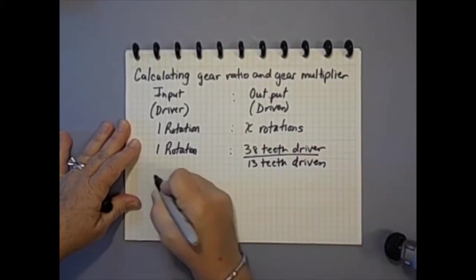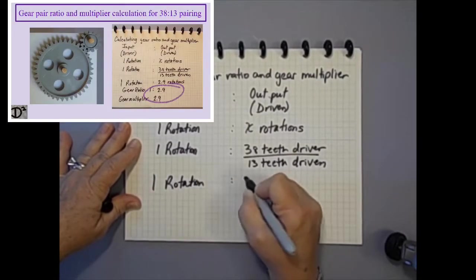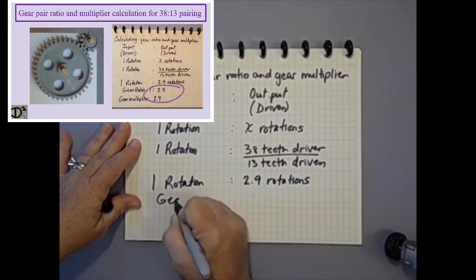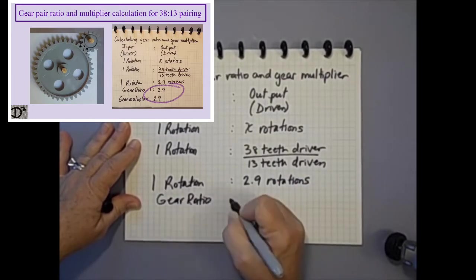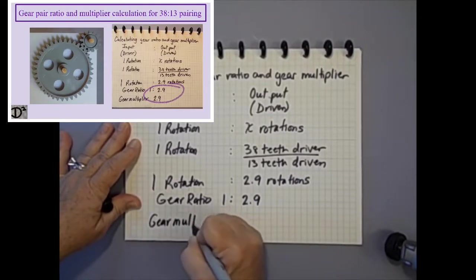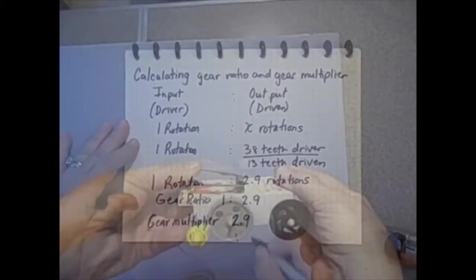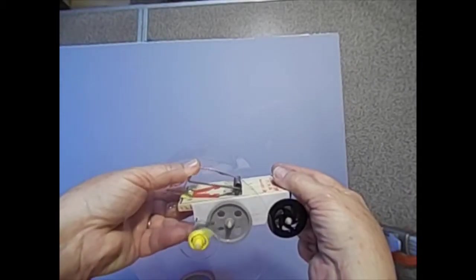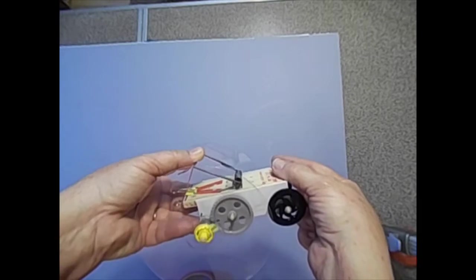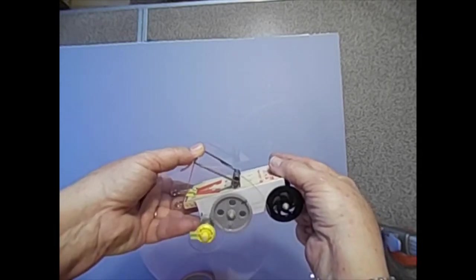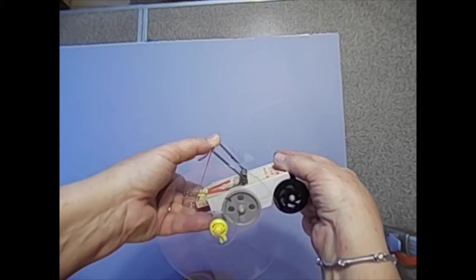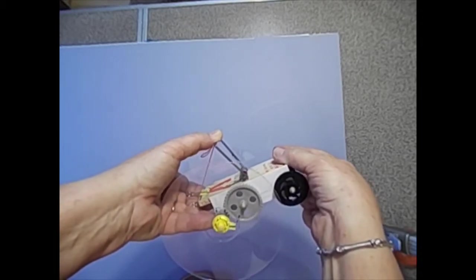So 38 divided by 13 equals a ratio of 1 to 2.9 and a gear multiplier of 2.9. This means that when the 38 tooth gear turns once, the 13 tooth gear will turn almost 3 times. Notice the reference marks on the gears. Look how slowly the large 38 tooth gear turns. In the time that it makes one rotation, the small 13 tooth gear turns almost 3 times. That's gear ratio for ya.